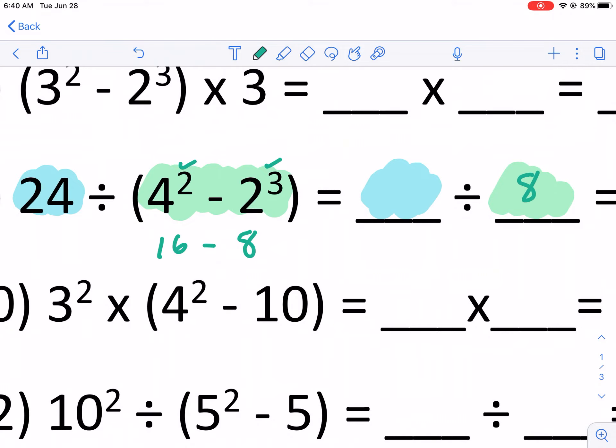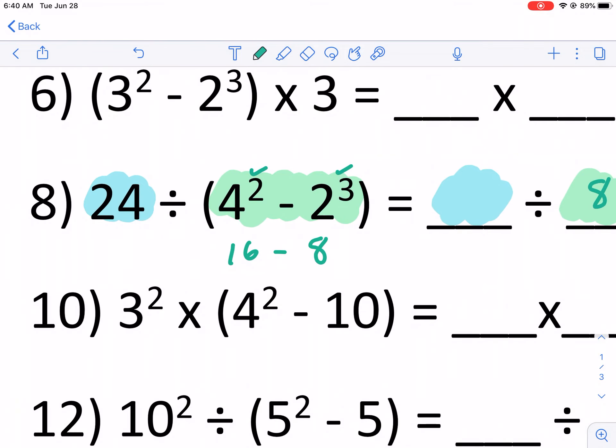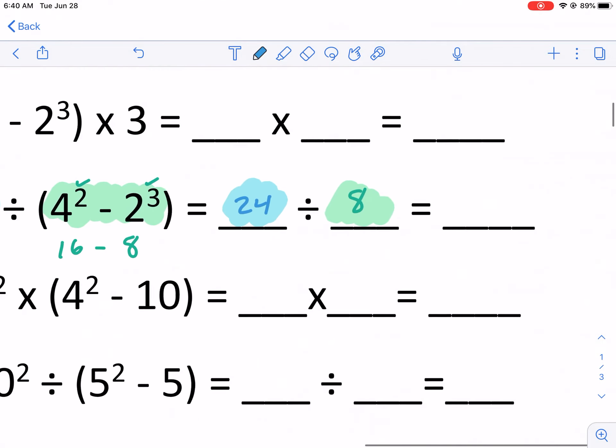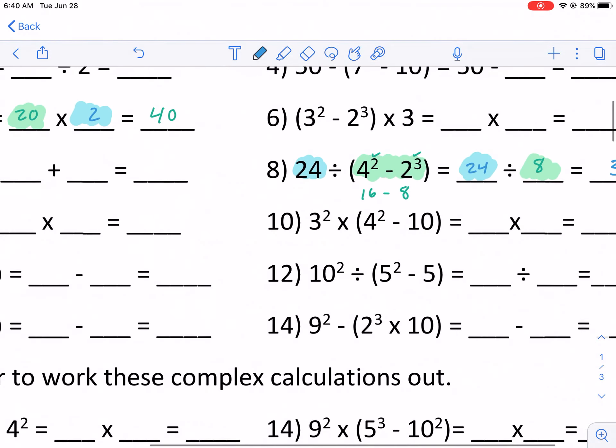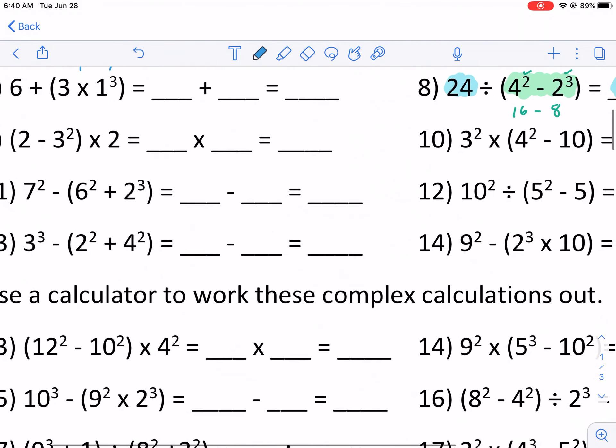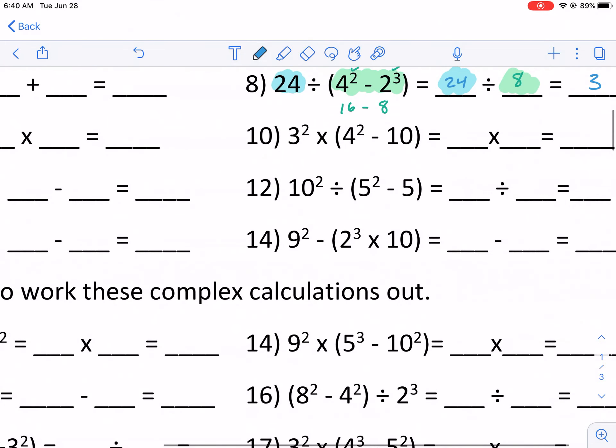16 minus eight is just eight. And now I have to do 24 divided by that. So 24 divided by that eight. And that gives me three, three is going to be my answer. And I know I changed it to blue, but it's the same thing. Let's do maybe one more of this section and then we'll move on.